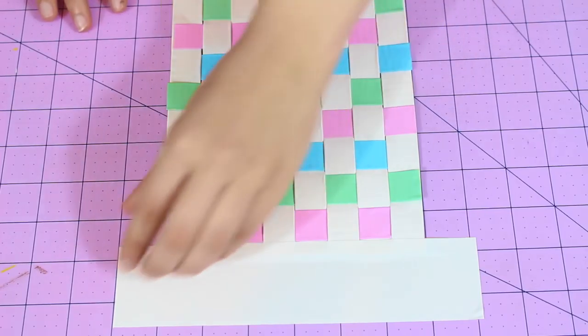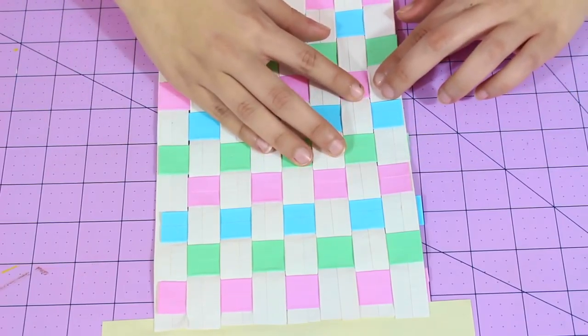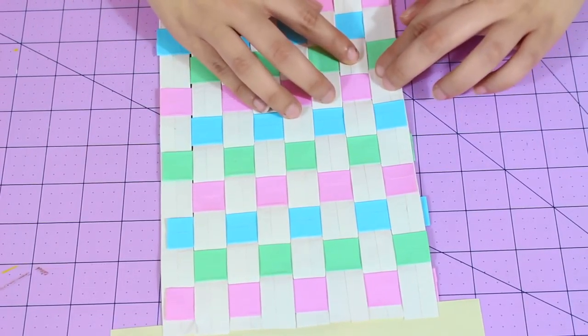So now that you're done weaving, we're going to gently peel this up. And I'm just flipping this over and I'm going to tighten the weave a little bit more.